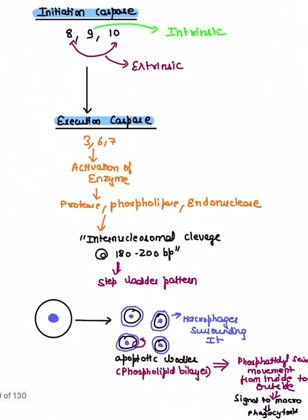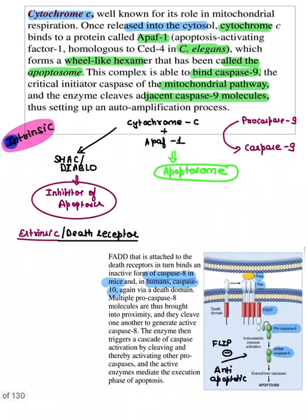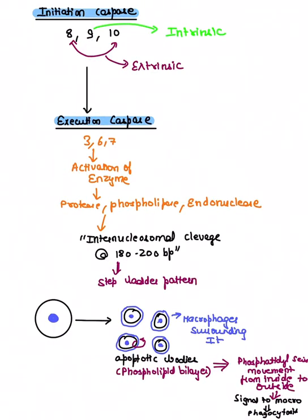The anti-apoptotic molecules are BCL-2, BCL-XL, and MCL-1 — four-letter BH1-2-4 domain. Pro-apoptotic: BAX, BAK, P53 — three-letter BH1-2-3 domain. The BH3-only proteins are sensors: BIM, BID, BAD, PUMA, NOXA — remember them as a story: 'BIM BID BAD PUMA NOXA'. The balance between pro- and anti-apoptotic molecules controls cytochrome C release.